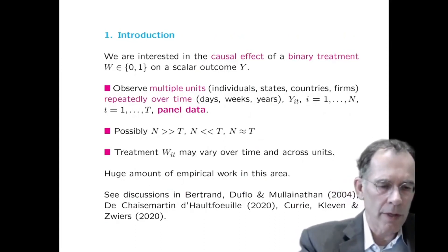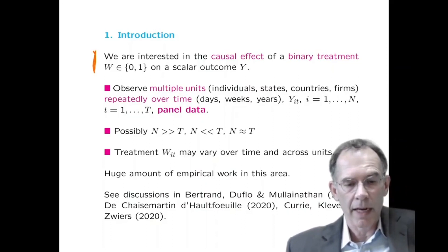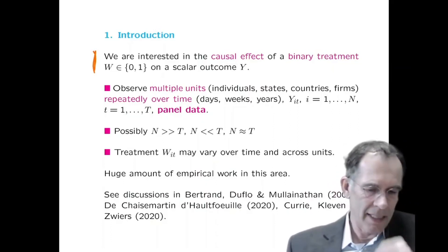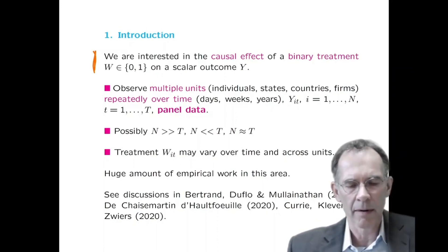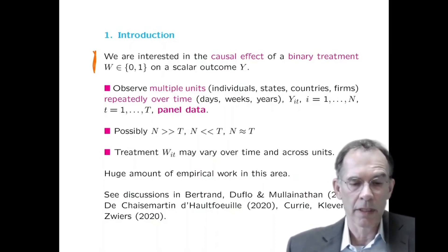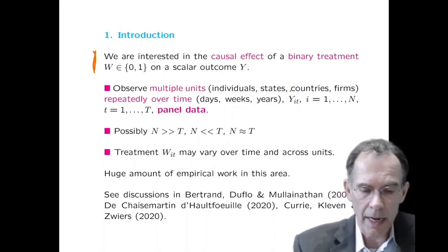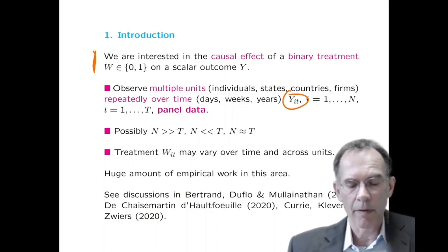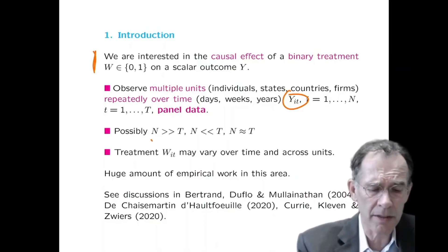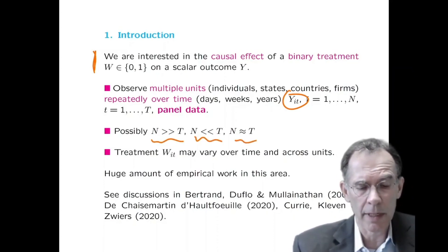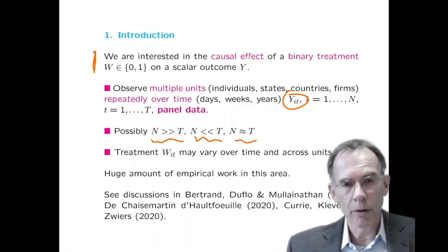As a general setup, I'm going to look at a setting where we have panel data and are interested in the causal effect of a binary treatment. We observe multiple units — individuals, states, counties, or firms — repeatedly over time, whether days, weeks, or years. The basic outcome is Y_it, where i runs from 1 to N and t runs from 1 to T, forming a balanced panel. We look at cases where N may be much bigger than T, much smaller, or similar in size.